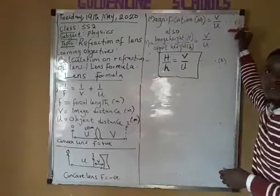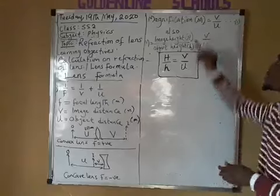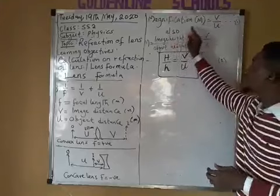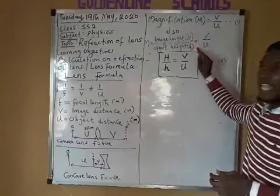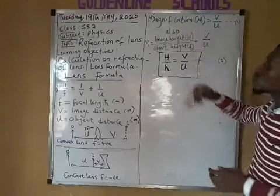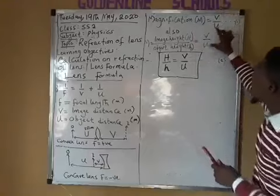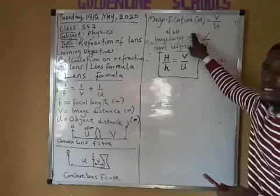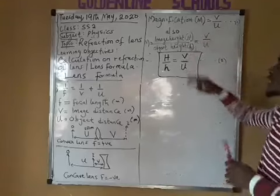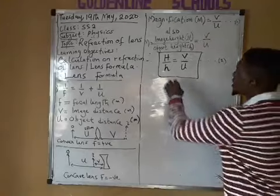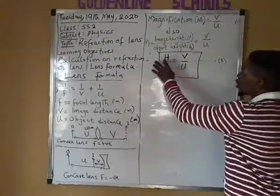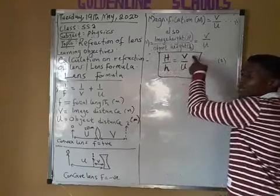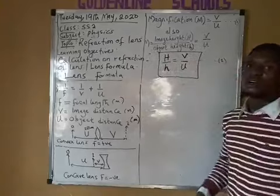The second formula we are looking at is magnification. Magnification M is simply equal to V/U. Also, magnification is equal to image height all over object height. So magnification M = H (capital letter, image height) / h (small letter, object height) = V / U.